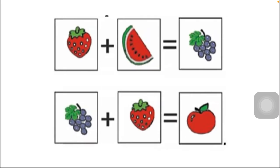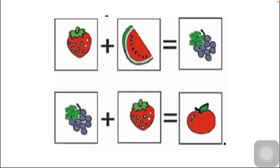I have zoomed in on the equation section. The equations are: strawberry plus watermelon equals grapes, and grapes plus strawberry equals apple. We have only the numbers one, two, three, and four written on the backs of the cards.